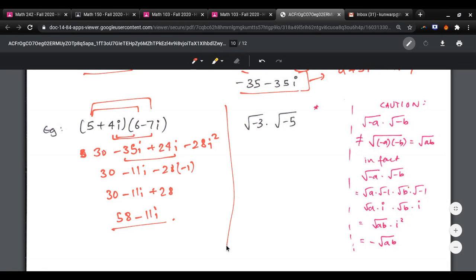Now caution, let's say you're asked to do this. One way to solve this would be negative 3 times negative 5, that becomes root 15, right? But that's not correct, this is wrong.